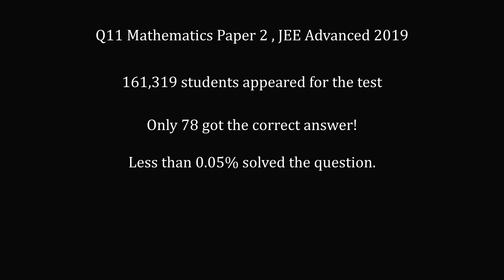This problem comes from the 2019 exam, and it was in the Mathematics Paper 2, Question 11. 161,319 students appeared for the test, and only 78 got the correct answer. That's less than 0.05% that correctly solved the question. To give an illustration of just how difficult this question was, imagine that each of these green stars represents a student that got the question correct. Here's what it would look like when you have approximately 160,000 students who didn't get the correct answer. It's a tiny, minuscule number of students that got this question correct.